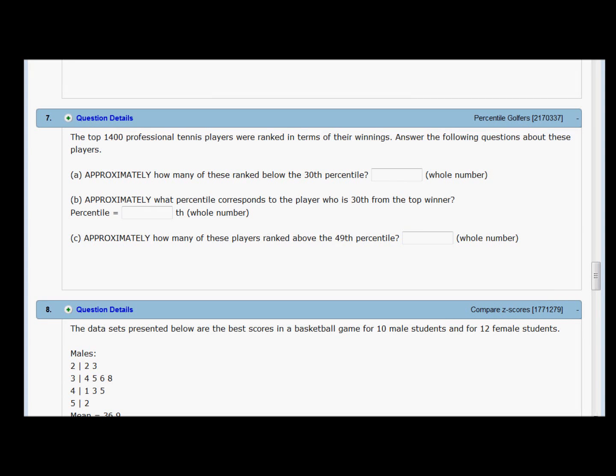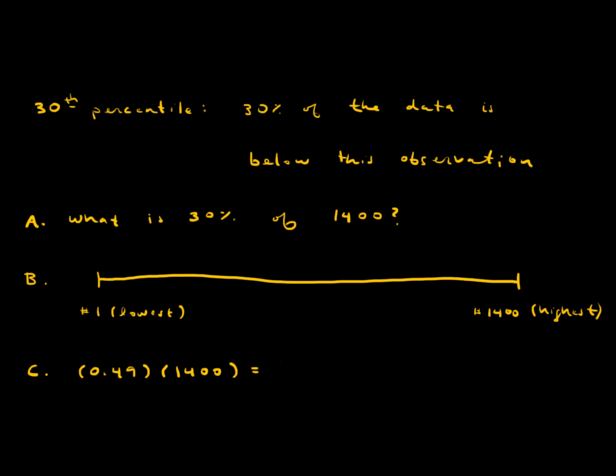In question 7, you're told that the top 1,400 professional tennis players are ranked in terms of their winnings. Part A asks approximately how many of these ranked below the 30th percentile. Remember that the 30th percentile means 30% of the data is below this observation. So the question is the same as asking: what is 30% of 1,400?